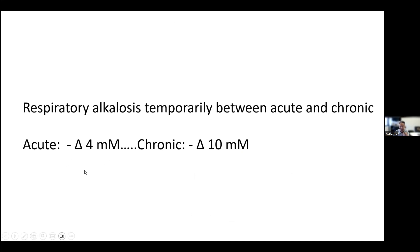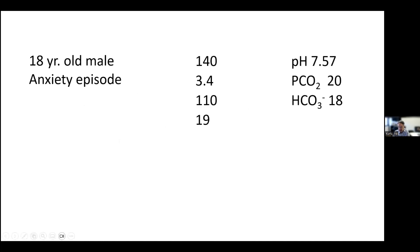If it was acute and PCO2 fell by 20, bicarbonate would fall by 2 — it should be about 21 to 23. If it's chronic, bicarbonate would fall by 10, landing at 15 — but it's not. It's sitting in between. If the PCO2 is staying down at 20, over the next day or two, the bicarbonate will continue to fall until it stops at around 15. This is an example of what looks like a mixed disorder but is really only one disorder — you just haven't waited long enough.